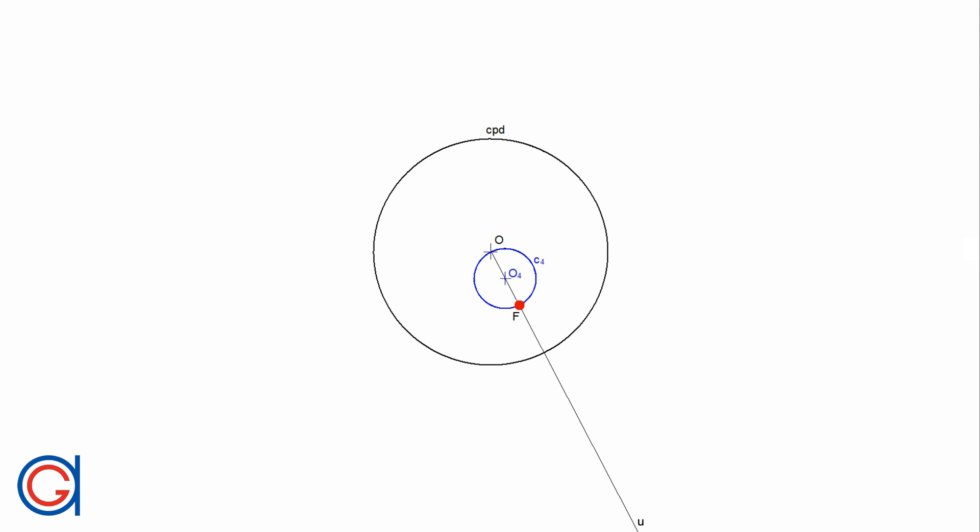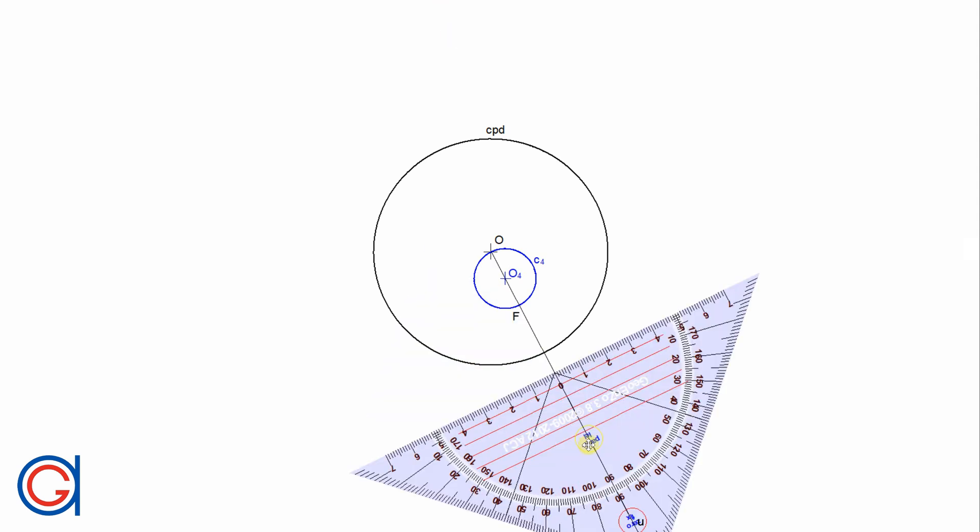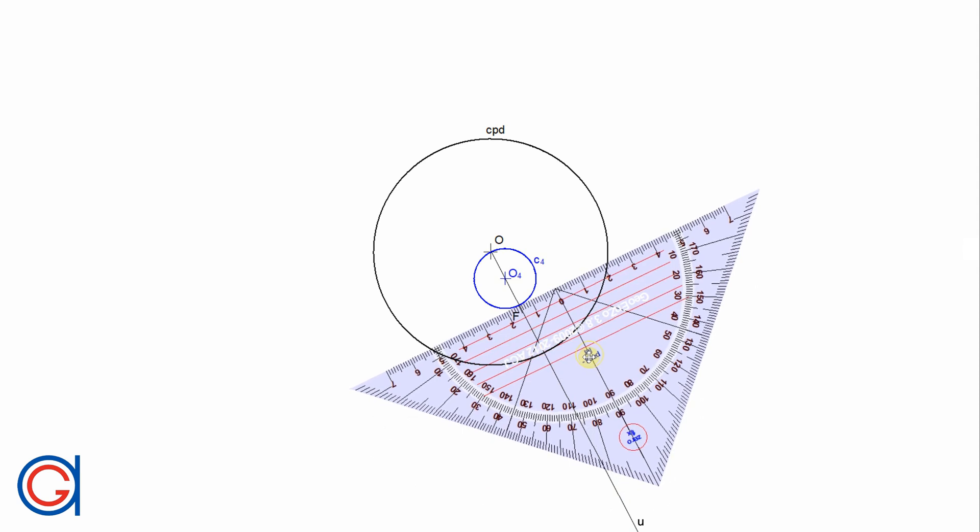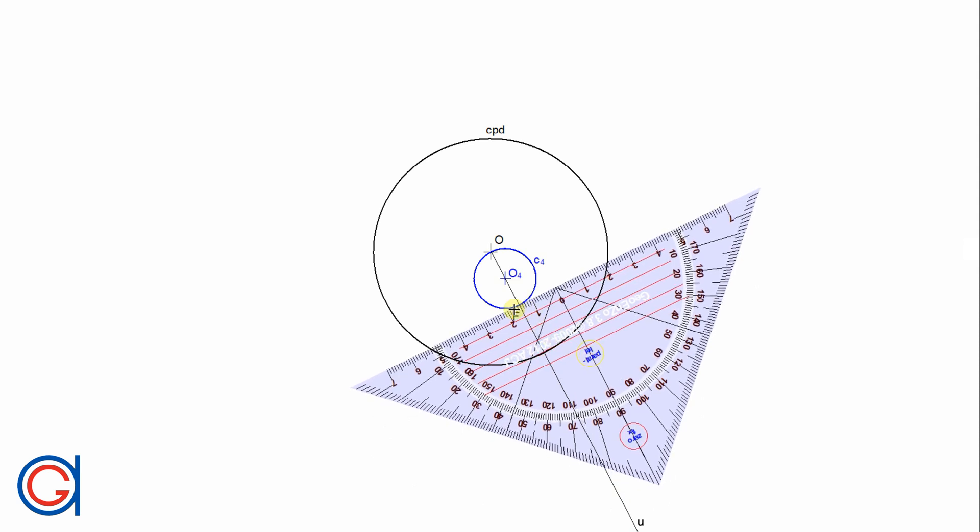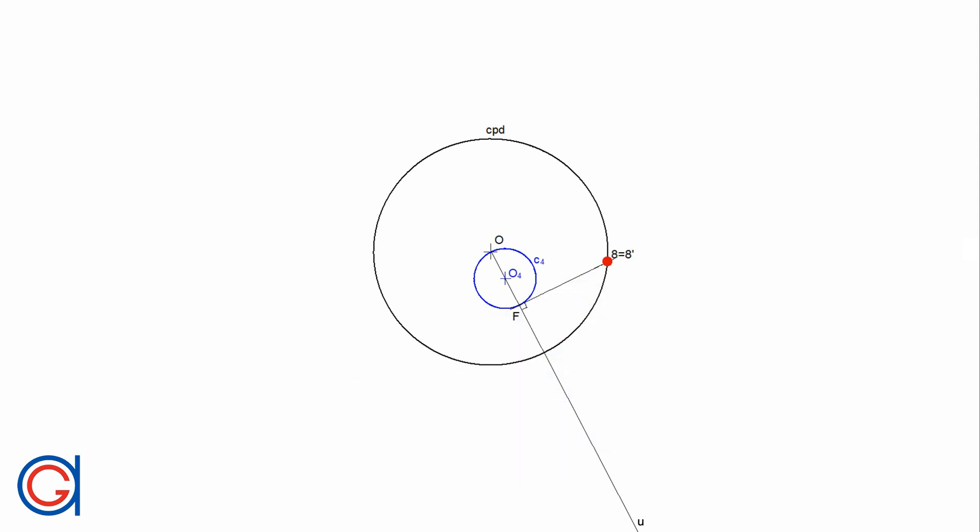To do this, we are going to draw a perpendicular line to the line U from the point F until it cuts the circumference of the reference circle at a new point which we will call point 8.